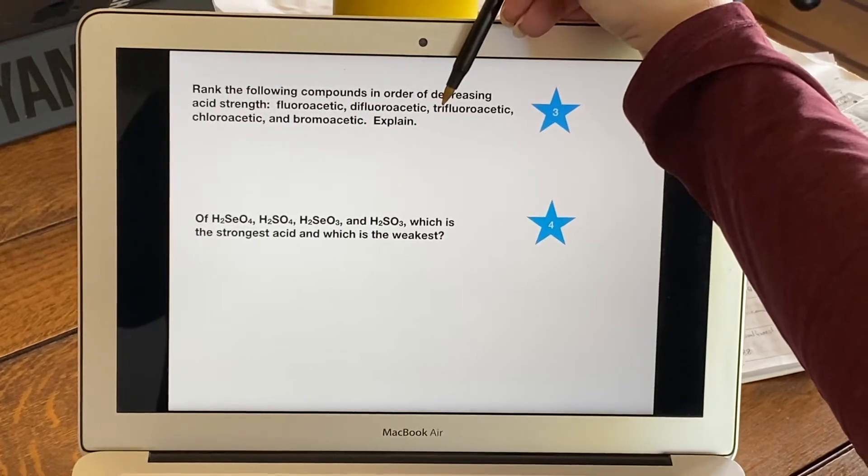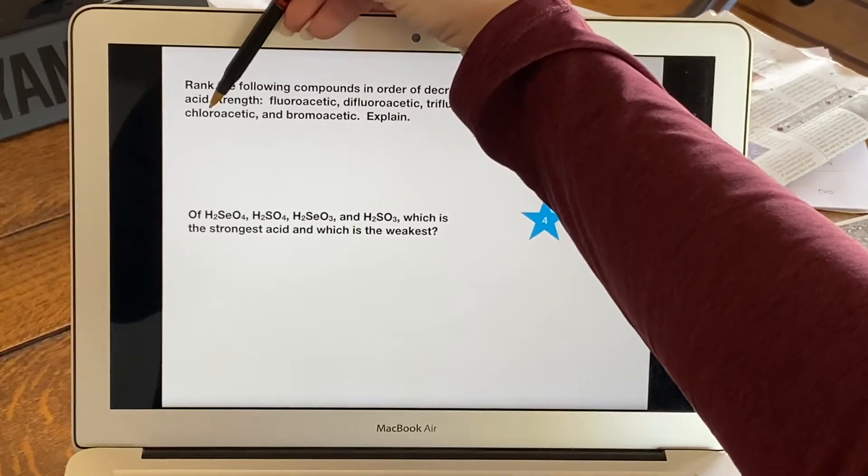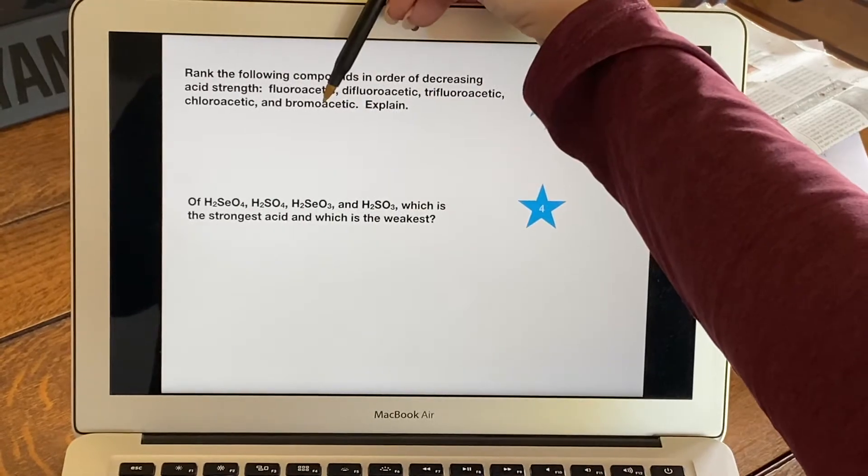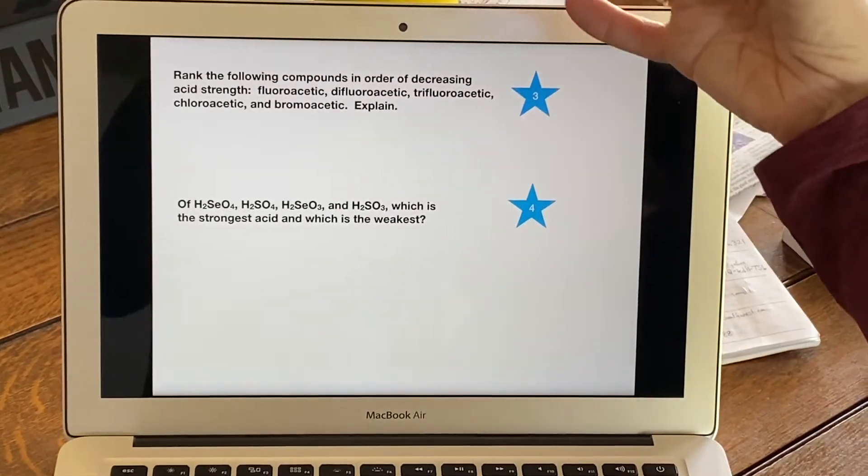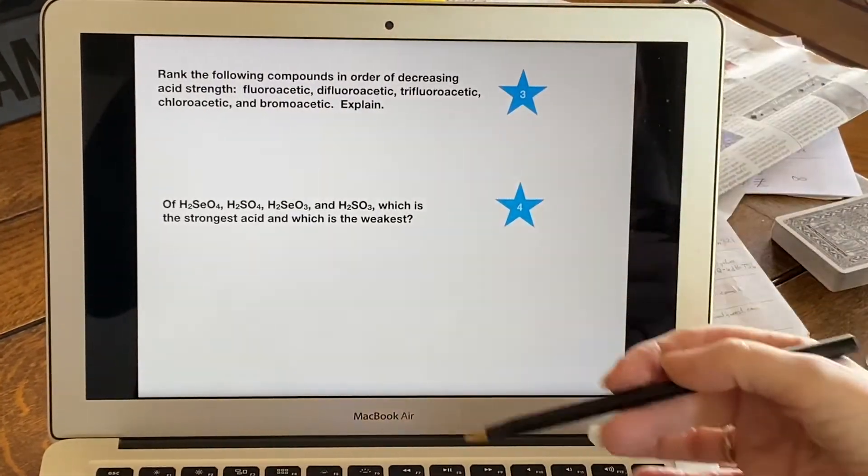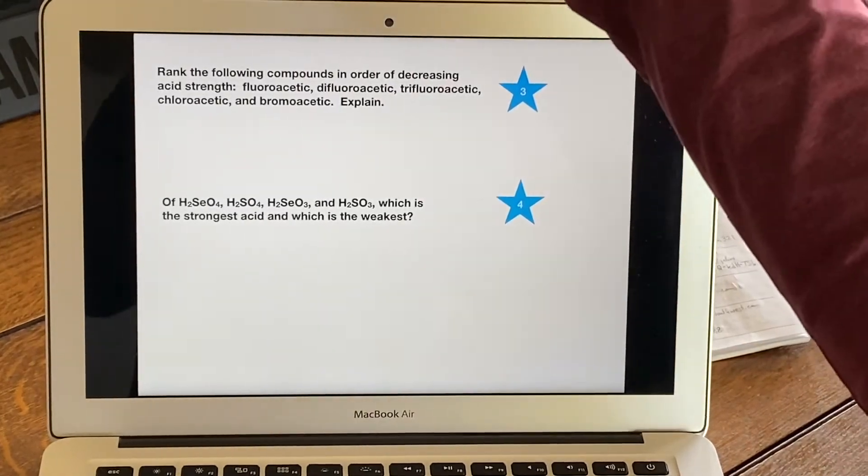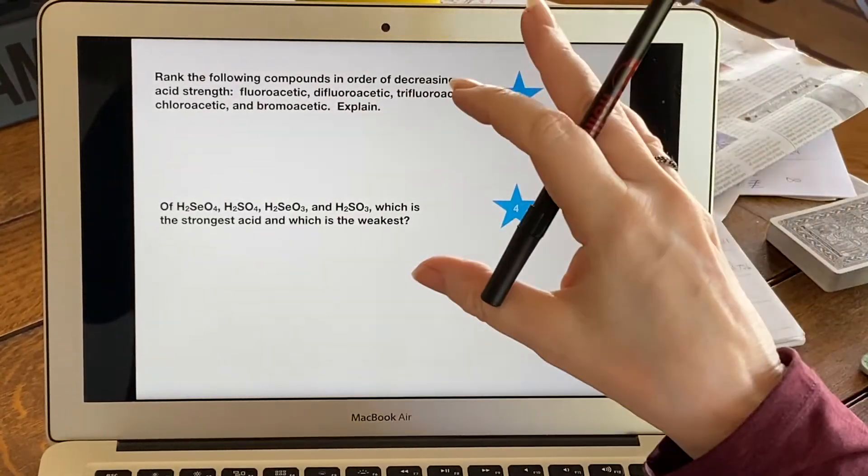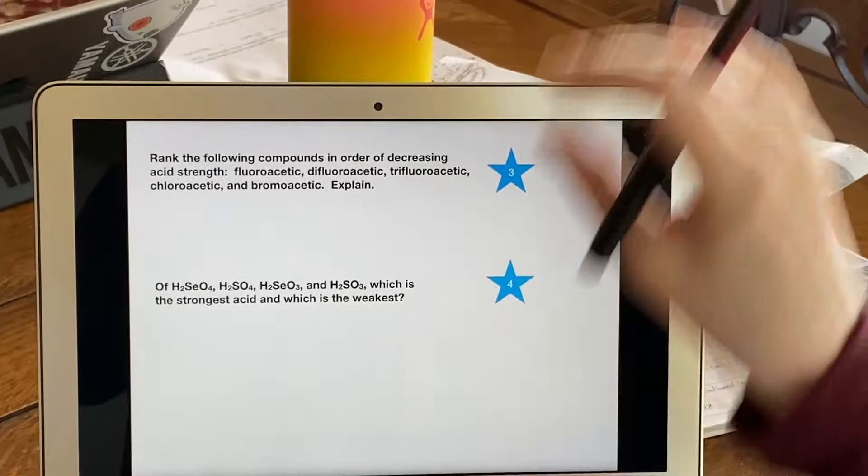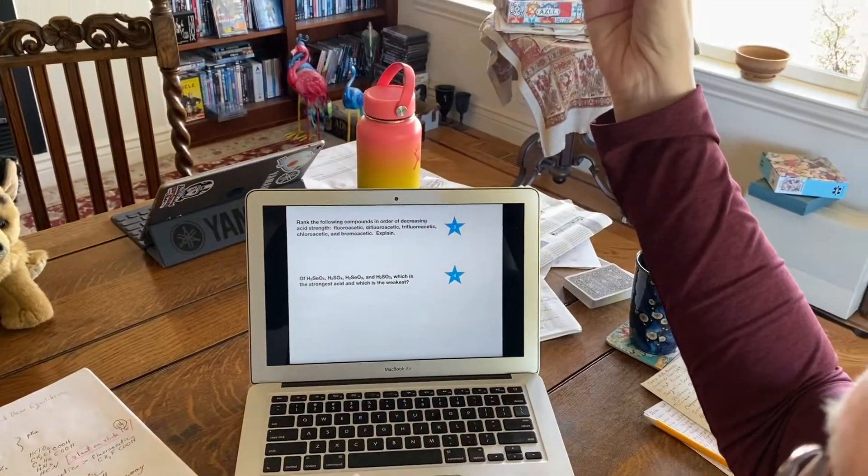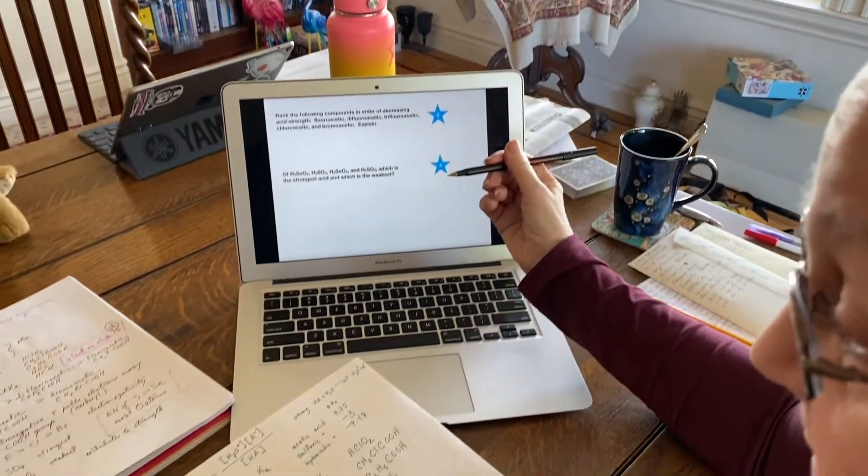And then we have a chloro and a bromo, and these are just singles. So think about what the periodic table is telling you: fluorine is above chlorine is above bromine. That's your electronegativities. Fluorine's the most, bromine's the least.